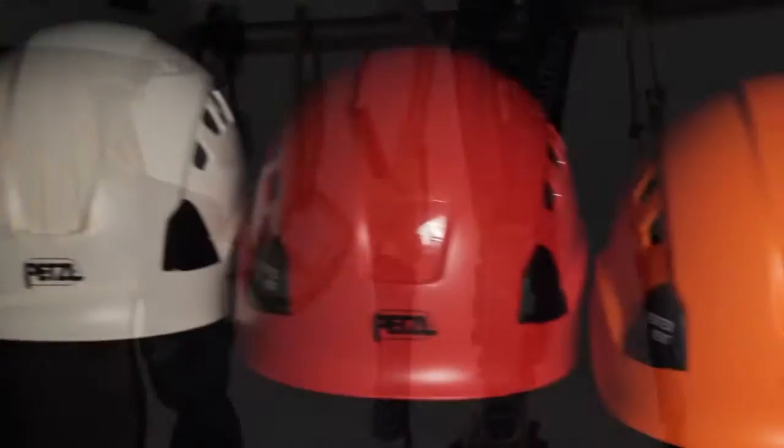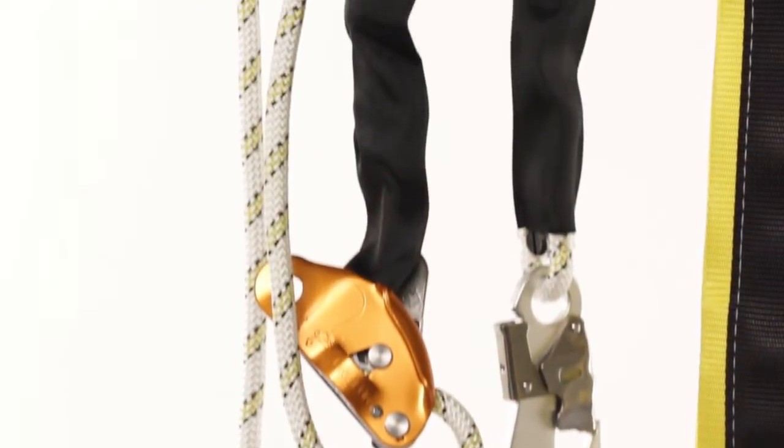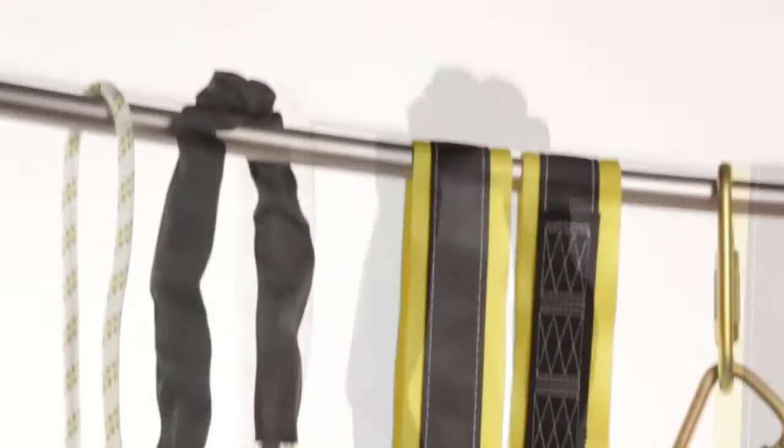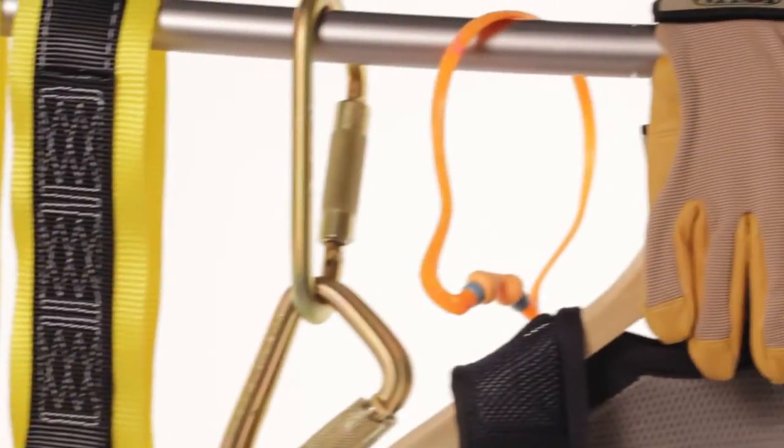The safety helmet is upgraded to the Petzl Vertex Vent. Instead of the positioning lanyard, the kit includes a 2-meter Gryon. There's also an additional 6-foot pass-through sling, more carabiners, upgraded gloves, and safety glasses.